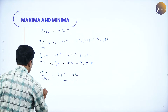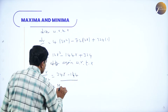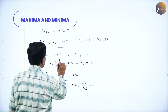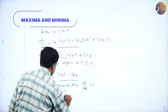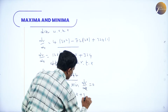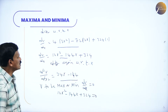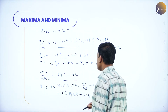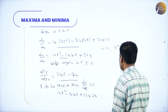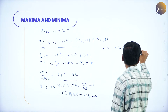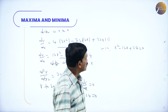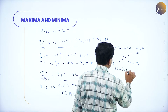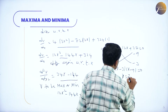For v to be maxima or minima, set dv/dx equal to 0: 12x² minus 144x plus 324 equals 0. Dividing by 12: x² minus 12x plus 27 equals 0. Factorizing: (x minus 3)(x minus 9) equals 0, so x equals 3 or x equals 9. Since x must be less than 9, we take x equals 3.